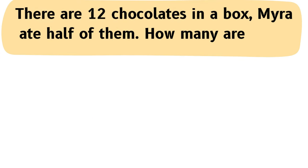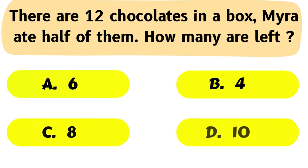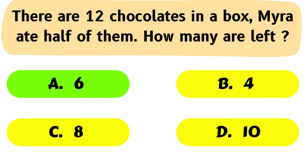Question No. 24: There are 12 chocolates in a box. Myra ate half of them. How many are left? The correct answer is Option A: 6.